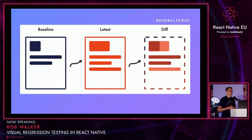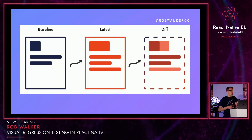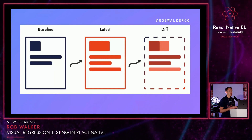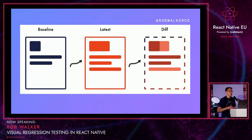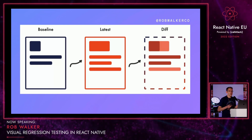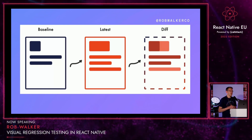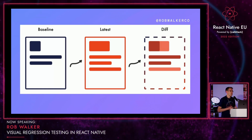Visual regression testing is normally implemented by taking screenshots of the app and comparing those screenshots. Your baseline screenshot would normally be committed into version control, and that is a known good state of the app. Every time you make some changes, you rerun all the screenshots and compare them to create a diff. If there are differences, that could indicate that something has gone wrong and your tests would fail. If the screenshots match, that's a pass and nothing unexpected has happened.